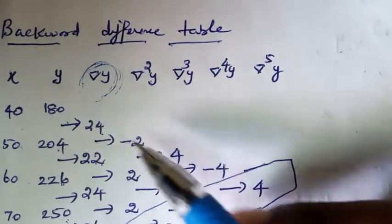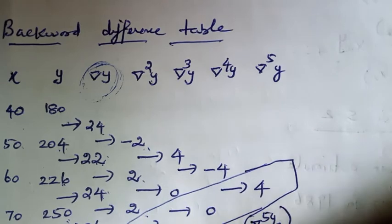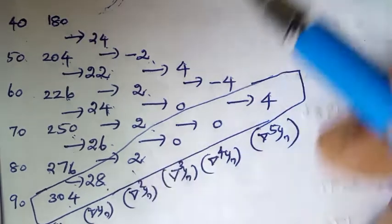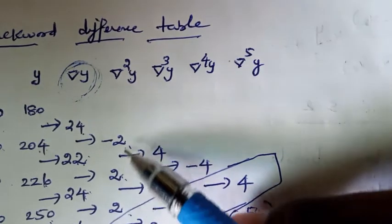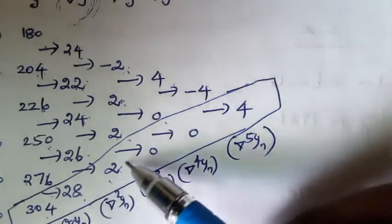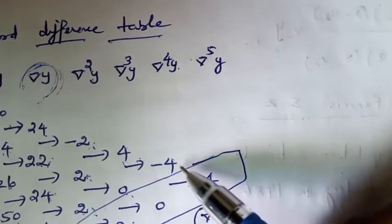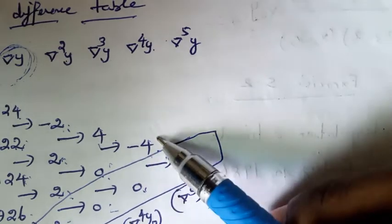Computing ∇²y: 22−24=−2, 24−22=2, 26−24=2, 28−26=2. Computing ∇³y: 2−2=0, 2−2=0. Computing ∇⁴y: 0−0=0. Computing ∇⁵y: 0−(−4)=4.